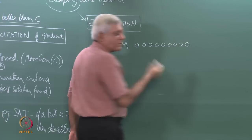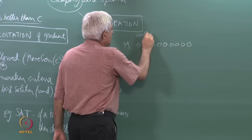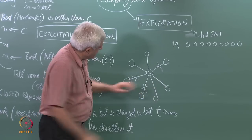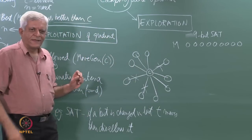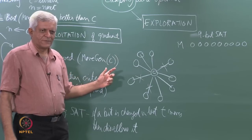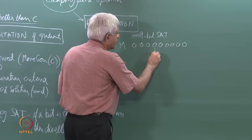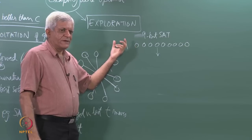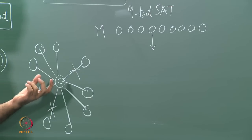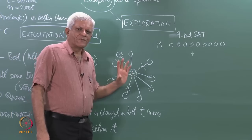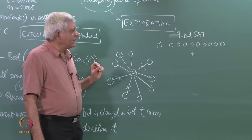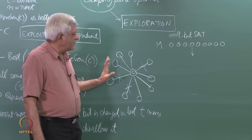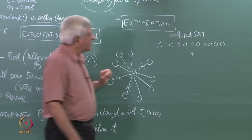So let us say I have a 9-bit problem — I can change any one of those 9 bits and move to the best. Supposing I have changed the fourth bit because that is the best move. I have an evaluation function for every node or every candidate solution — for SAT it could be the number of clauses satisfied. So I generate all these neighbors and just move to the best amongst them. It does not matter whether it is better or not, I am allowed to move to the best amongst them.